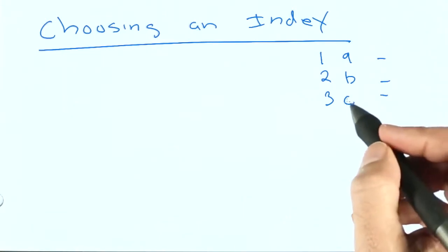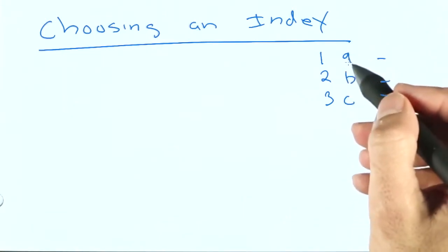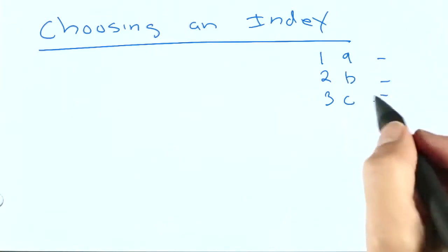Now, the database could use this index, or it could use this index, or it could use this index. It can't use all three, it could only use one of them.